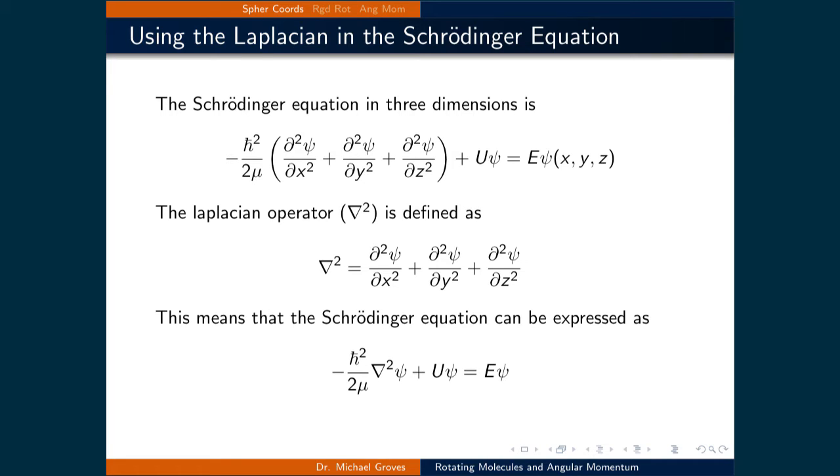In the top line is the Schrödinger equation for three dimensions. All that is different is that there are now double derivatives for both the y and z direction in addition to the x direction. So now it reads negative ℏ² over 2μ times d²ψ/dx² plus d²ψ/dy² plus d²ψ/dz² all plus the potential times ψ, and this is equal to the energy times ψ.